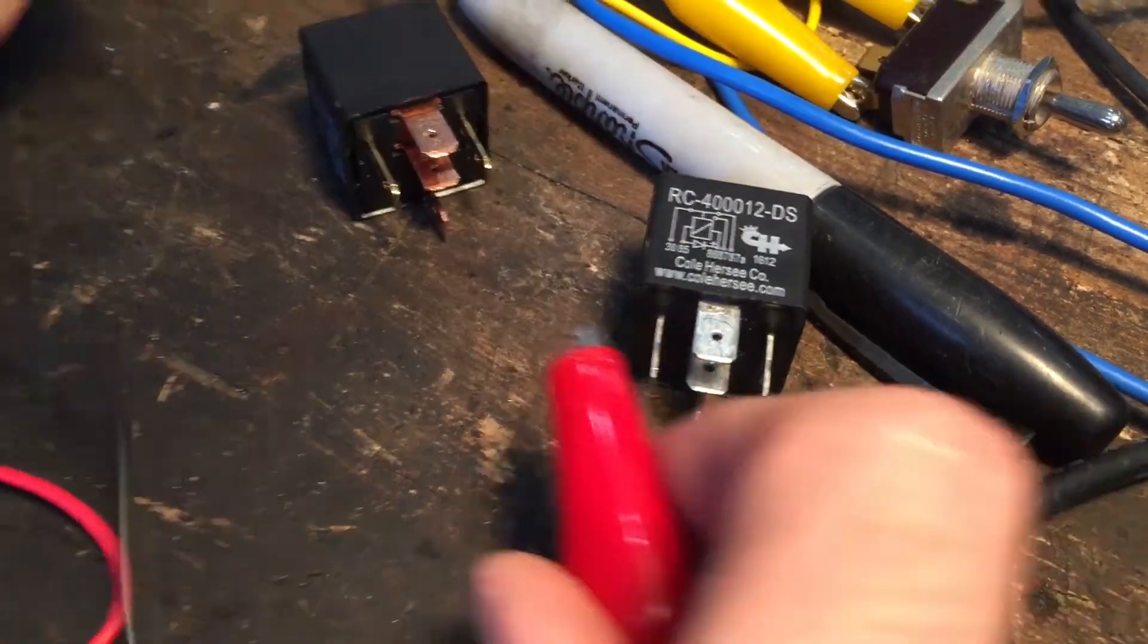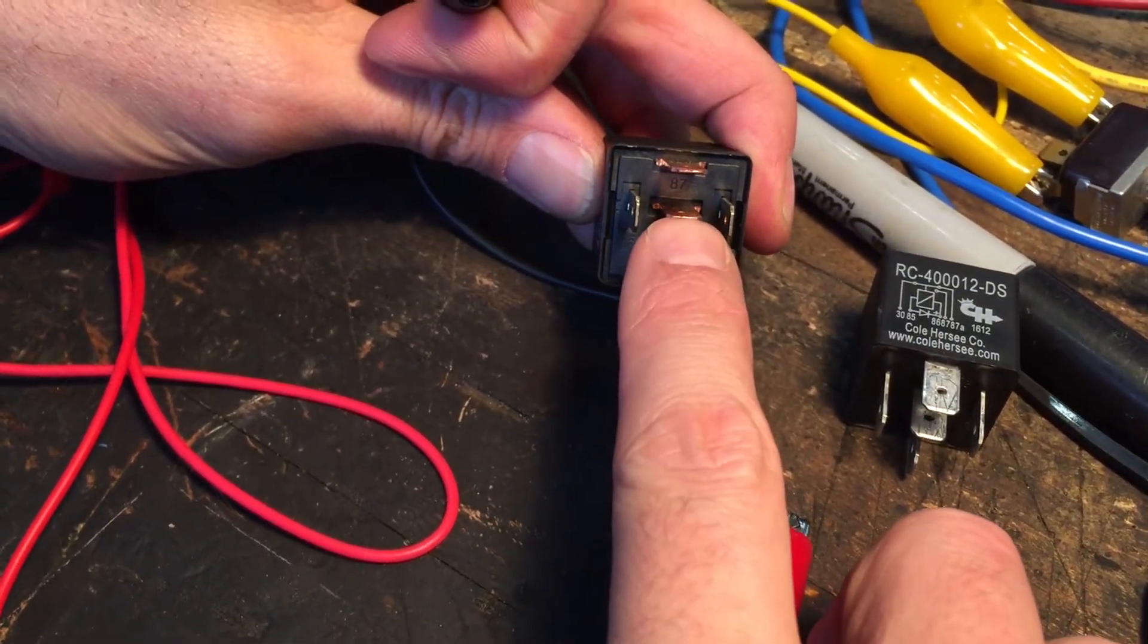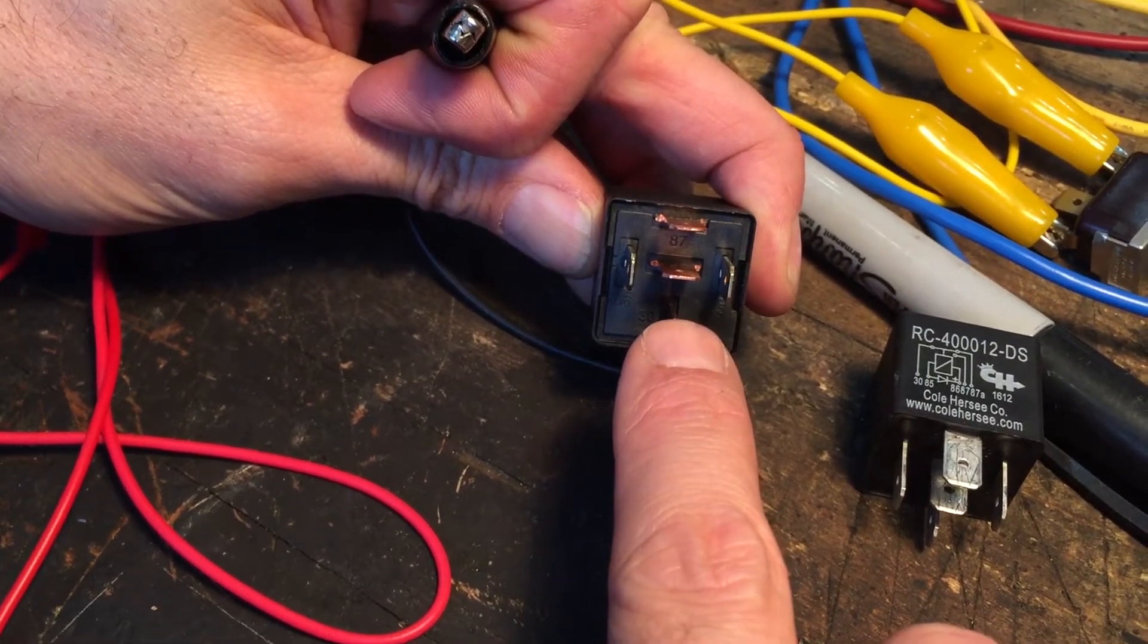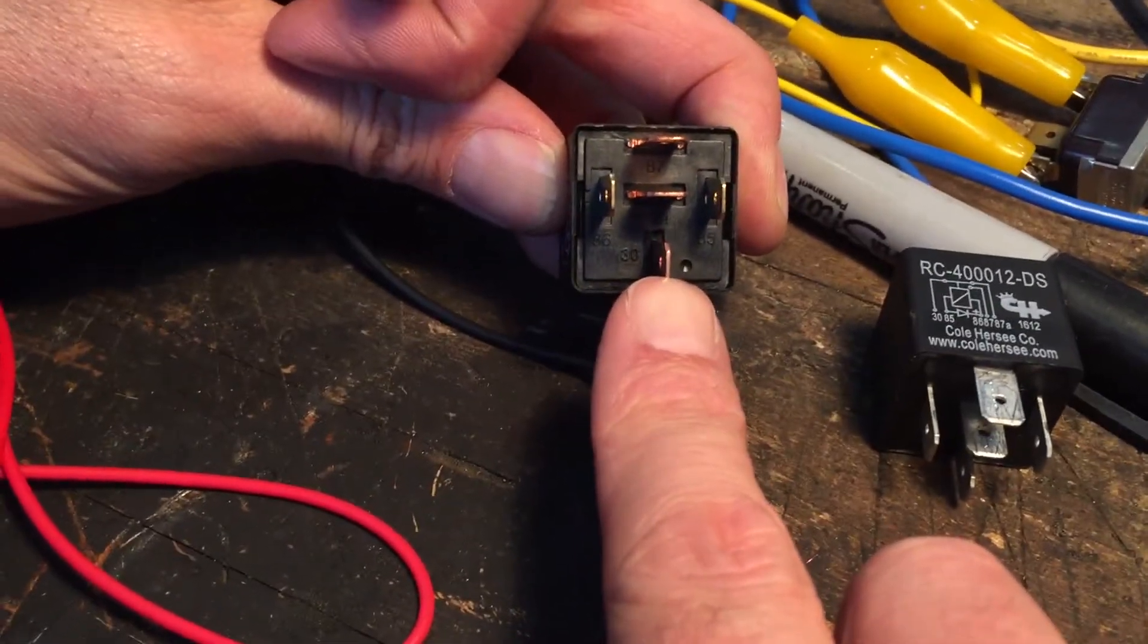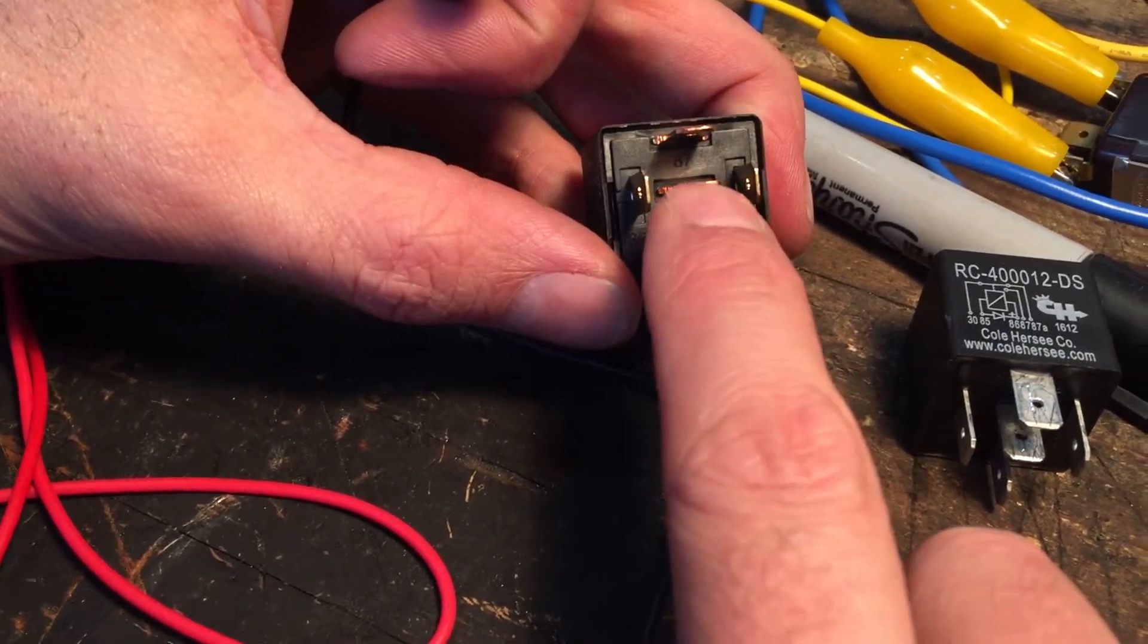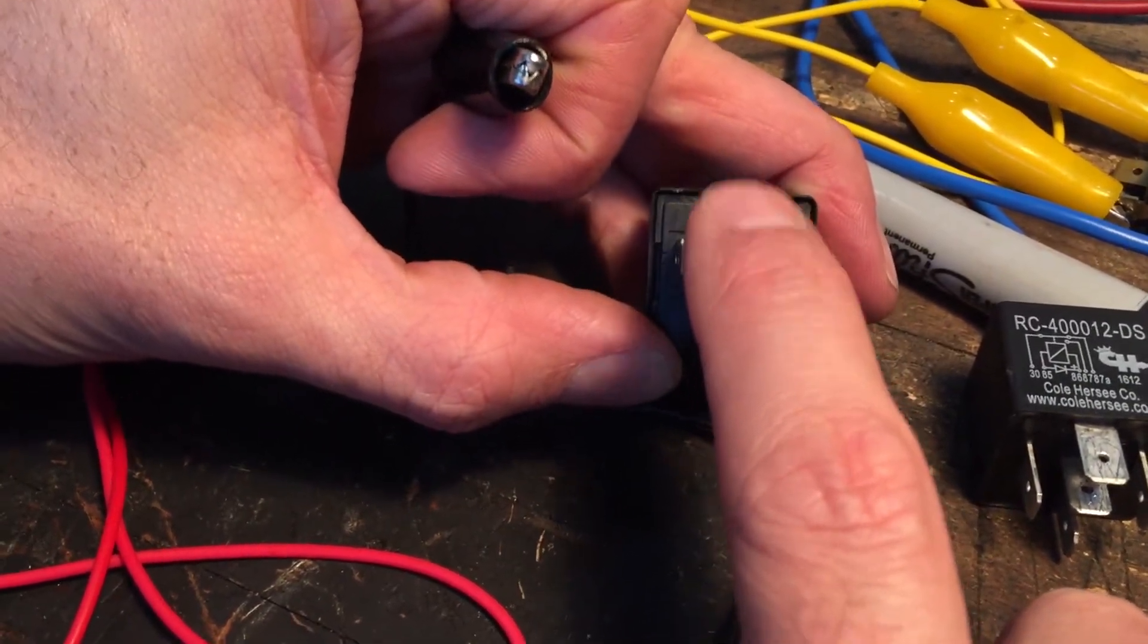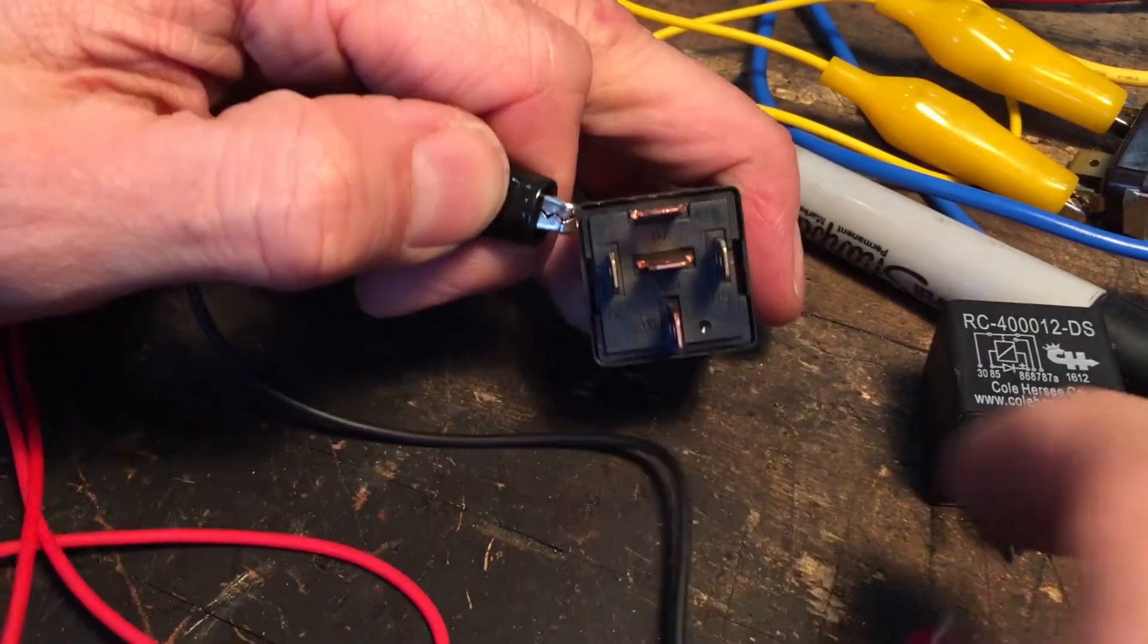Now what's happening here is when we energize, so non-energized, the middle pin and the bottom pin, this bottom pin which is number 30, the middle pin and 30 are connected together. As soon as we energize these, pin 87 at the top and pin 30 at the bottom are energized or connected together. So by energizing this, all we're doing is clicking the switch between this 87A pin and 87 pin. So all we're doing is moving back and forth between these like a light switch by energizing the coil inside of here.